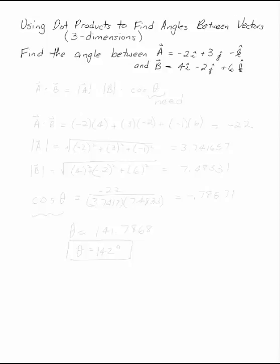In three dimensions, find the angle between the vectors A and B. Minus 2i plus 3j minus k and 4i minus 2j plus 6k. The dot product is the magnitude of A times the magnitude of B times the cosine of the angle between them. This is what we need.